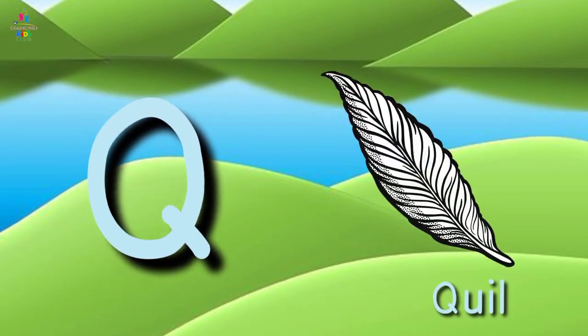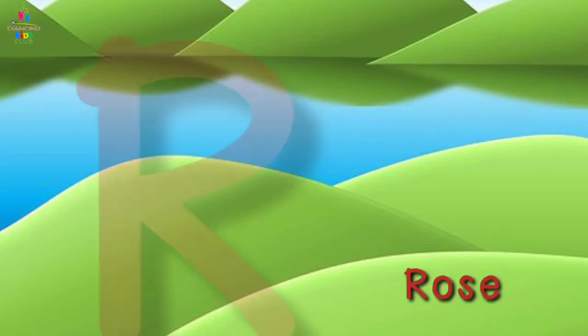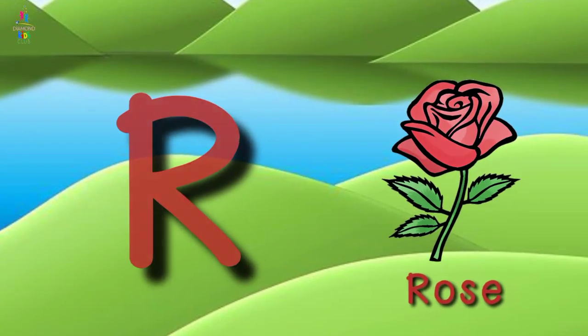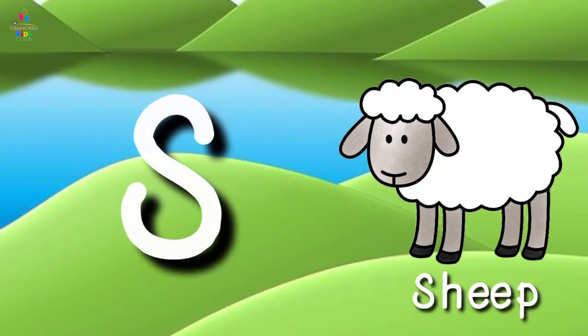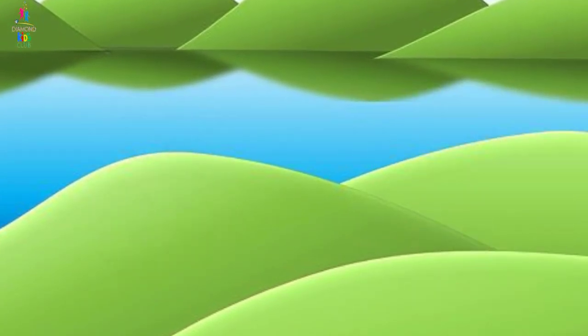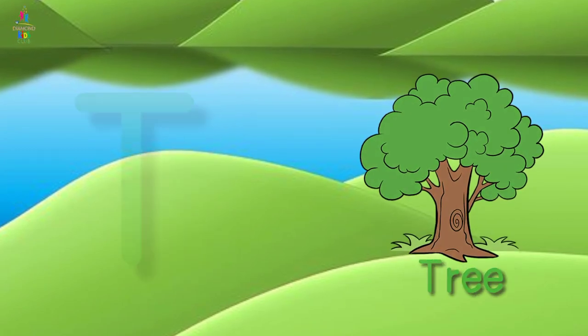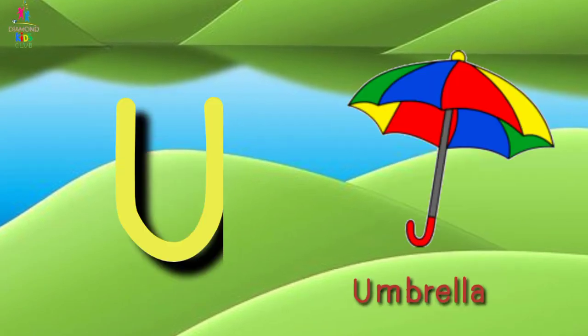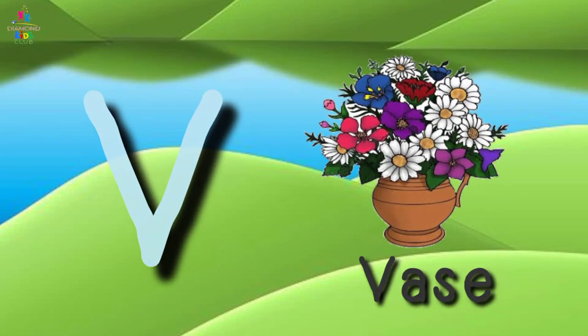Q for Quill, R for Rose, S for Ship, T for Tree, U for Umbrella.